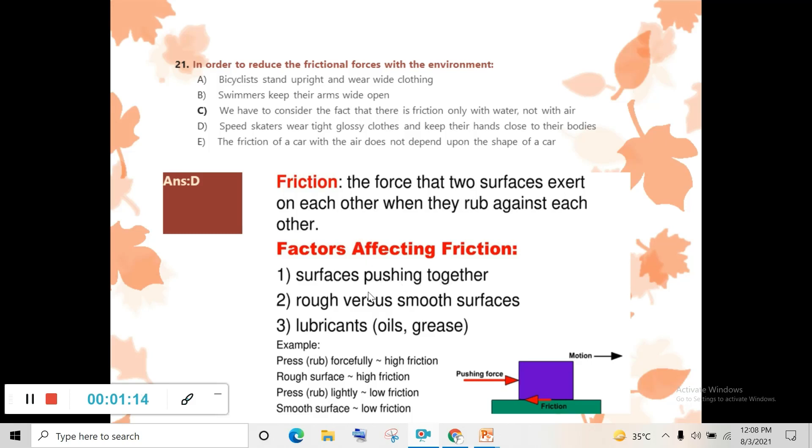Factors affecting friction: surface pushing together, rough versus smooth surfaces. Smooth surfaces have low friction. Rough surfaces have high friction. Lubricants like oil or grease can reduce friction. If you press forcefully, high friction. Rough surfaces, high friction. Press lightly, low friction. Smooth surface, low friction.